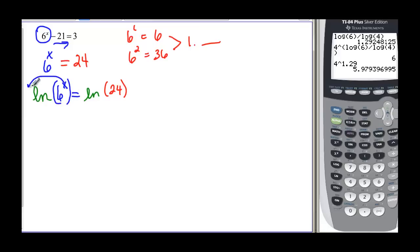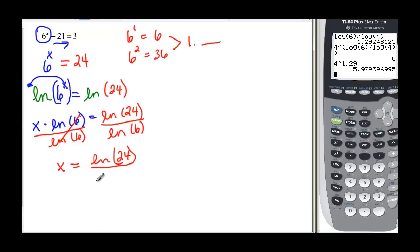The x has to go out in front, because the property says that when I have an exponent in my argument, I can multiply it times the log and take it out of the argument. Because it's an exponent times an exponent. That's what we do when we raise a power to a power. So x times ln of 6 is equal to ln of 24. And I divide off the ln 6 so I can get x by itself. So I divide both sides by ln 6. And x is going to be equal to ln 24 divided by ln 6.